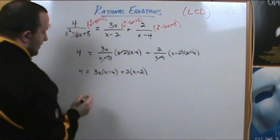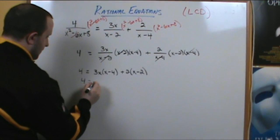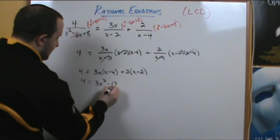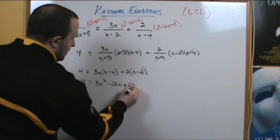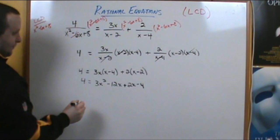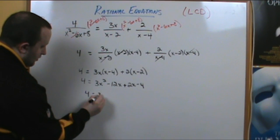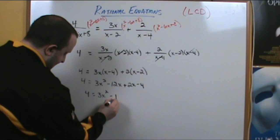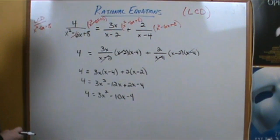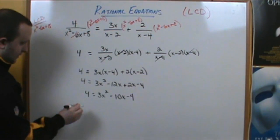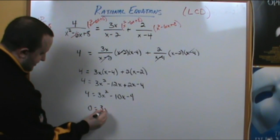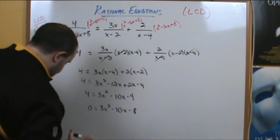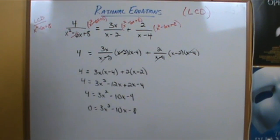Simplifying, we get 4 equals 3x squared minus 12x plus 2x minus 4. Combining like terms gives us 4 equals 3x squared minus 10x minus 4. Bringing the 4 to the other side gives us 0 equals 3x squared minus 10x minus 8. Now we have a quadratic equation, which we can solve by the quadratic formula or by factoring.